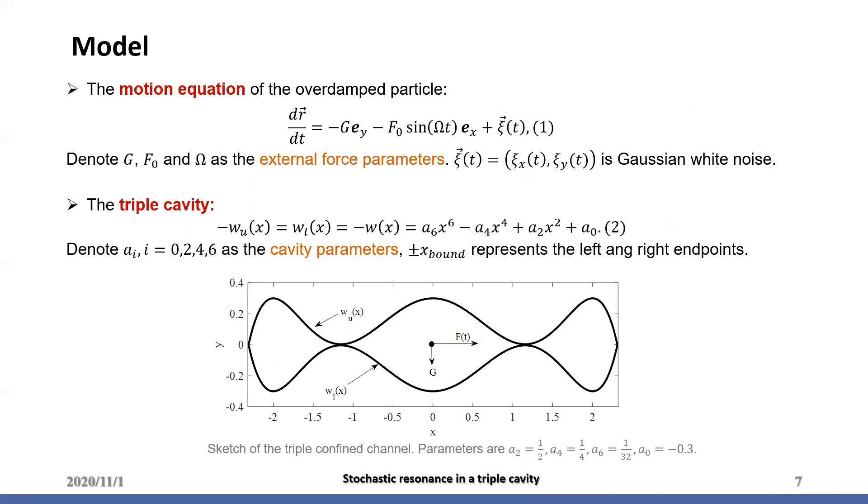Here, the model in our study is given. Equation 1 is used to model the transport of the overdamped particle. The noise is Gaussian white noise. J and Ft are external forces with parameters J, f0 and omega.